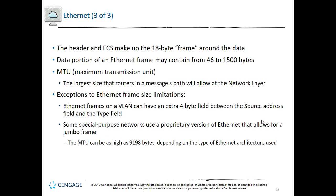Because of the overhead in each frame and the time for NICs to manage frames, larger frame sizes generally result in faster throughput. Notable exceptions: Ethernet frames on a VLAN can have an extra 4-byte field between source address and type field, making the maximum frame size 1,522 bytes. Some special-purpose networks use a proprietary jumbo frame where the MTU can be as high as 9,198 bytes, depending on the Ethernet architecture.